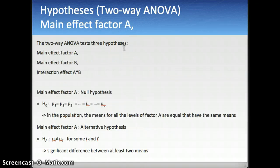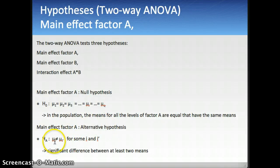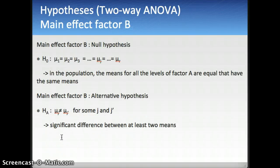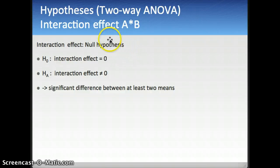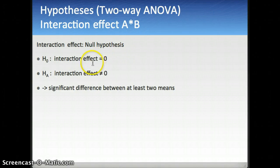Now we have a hypothesis for the main factor A. The null hypothesis is that the means are the same across the factors, and the alternative hypothesis is that at least one of the means is different from another. You have the same hypothesis for factor B — that the means are the same across the factors, with the alternative that at least one mean is different. Thirdly, you have the interaction between factor A and B, testing an interaction effect. The null hypothesis is that there is no interaction effect, and the alternative hypothesis is that there is an interaction effect.